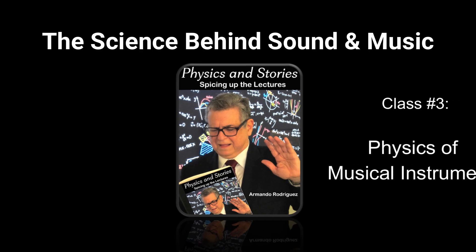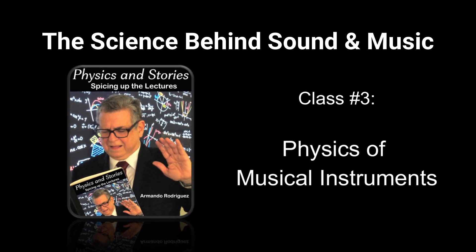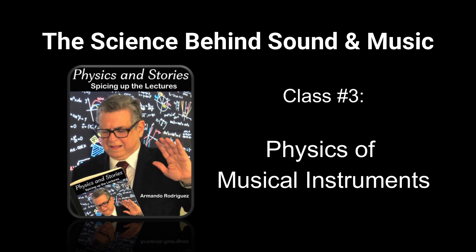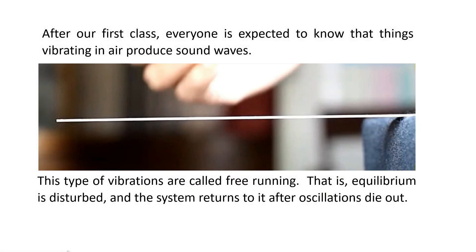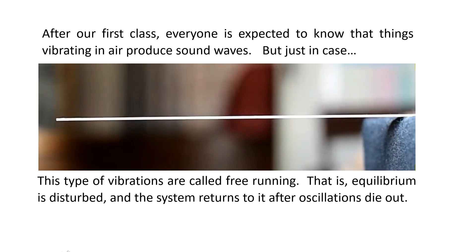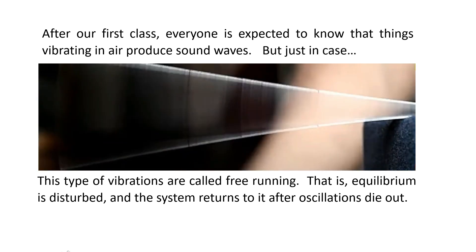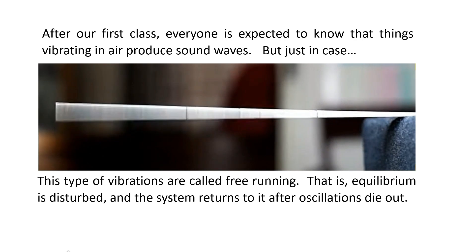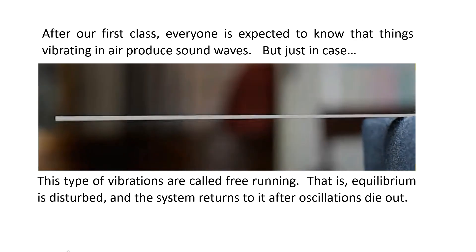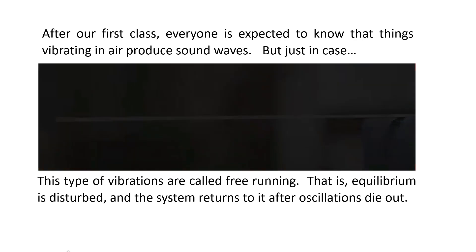Class number three, physics of musical instruments. After the first class, everyone is expected to know that things vibrating in air produce sound waves. But just in case, this type of vibrations are called free running, that is, equilibrium is disturbed.